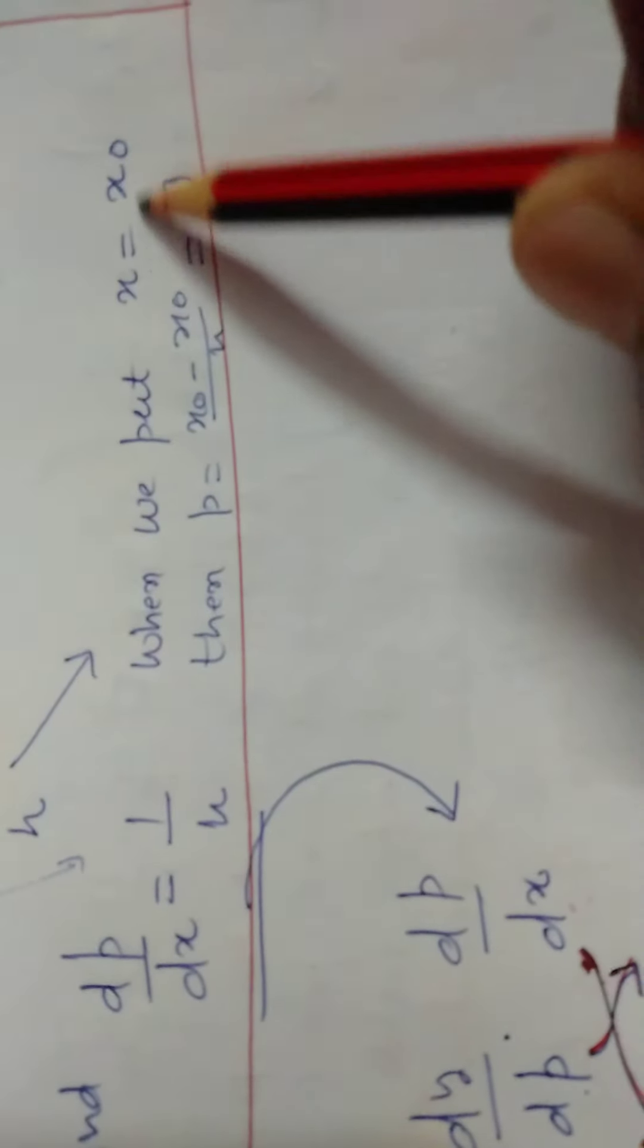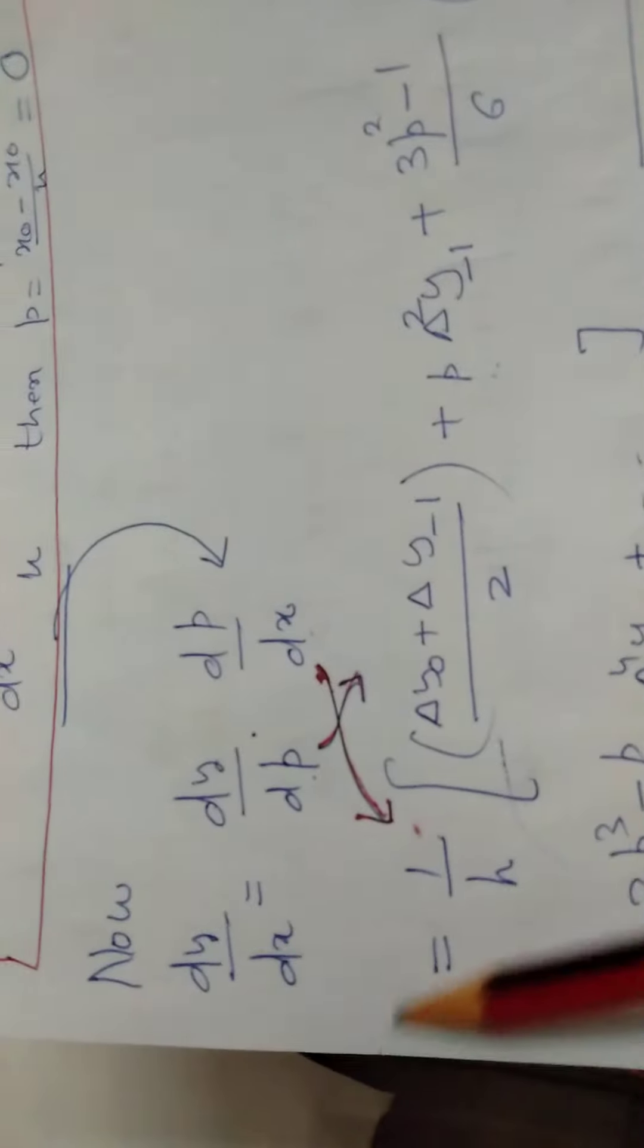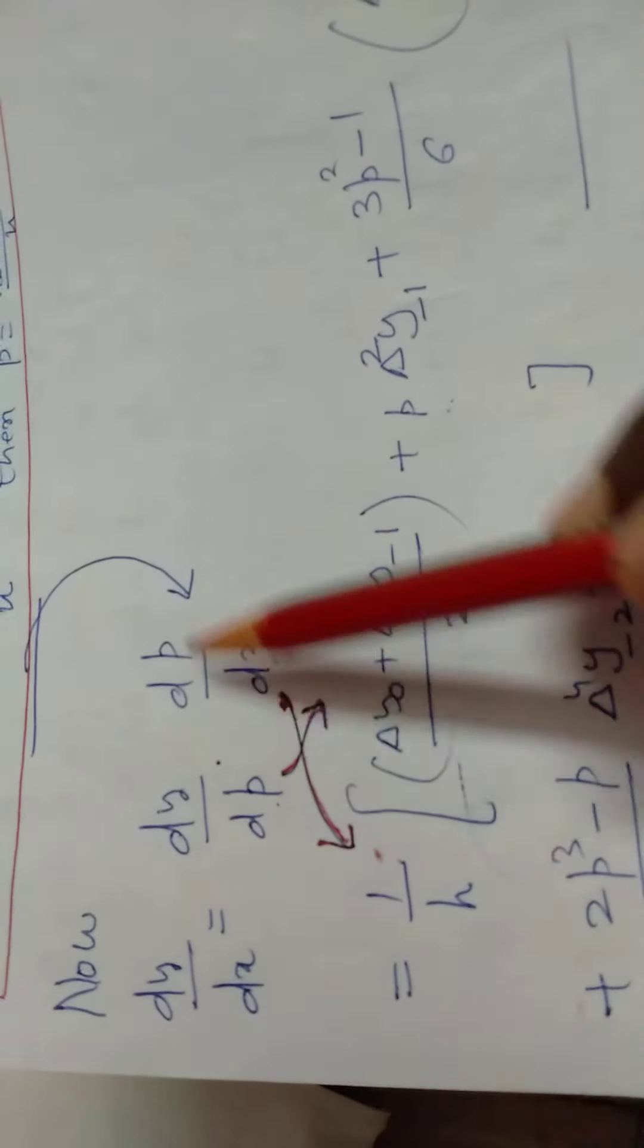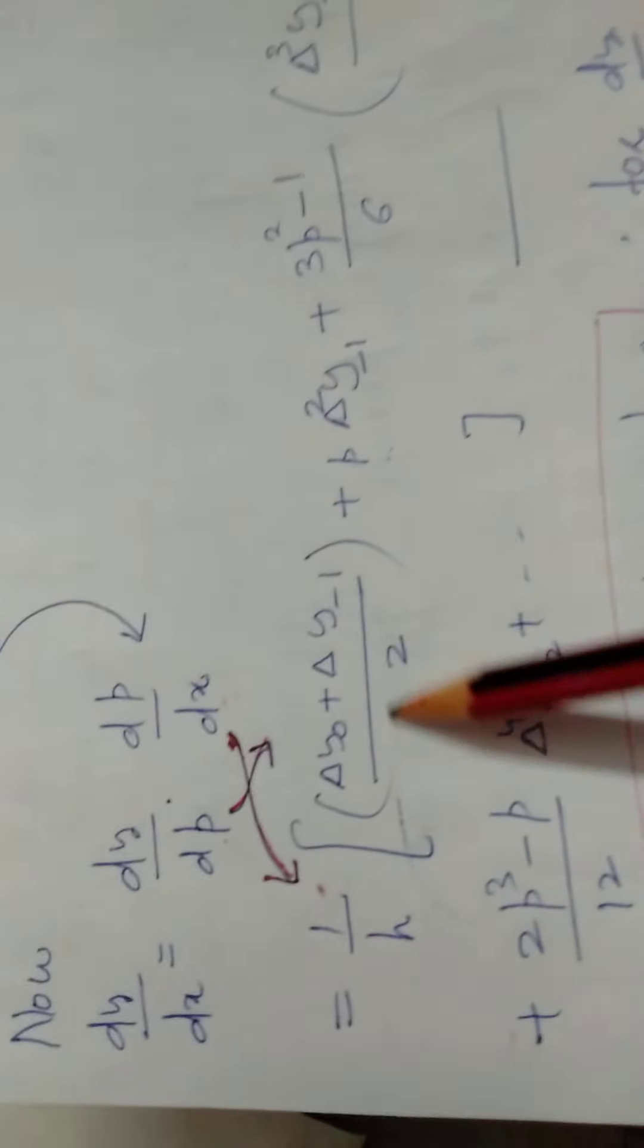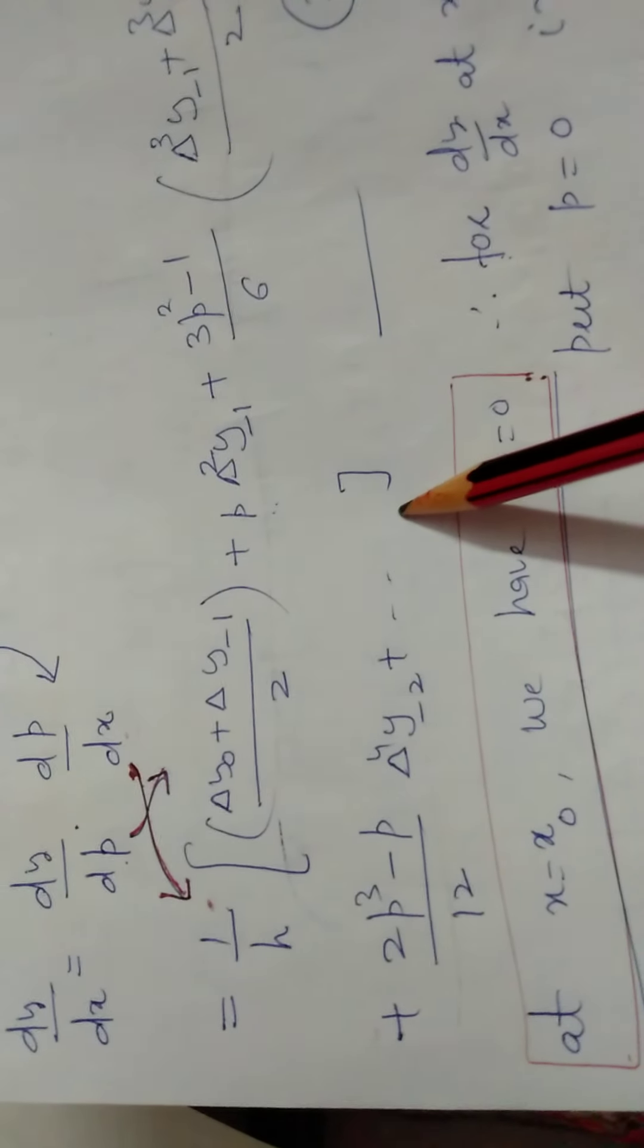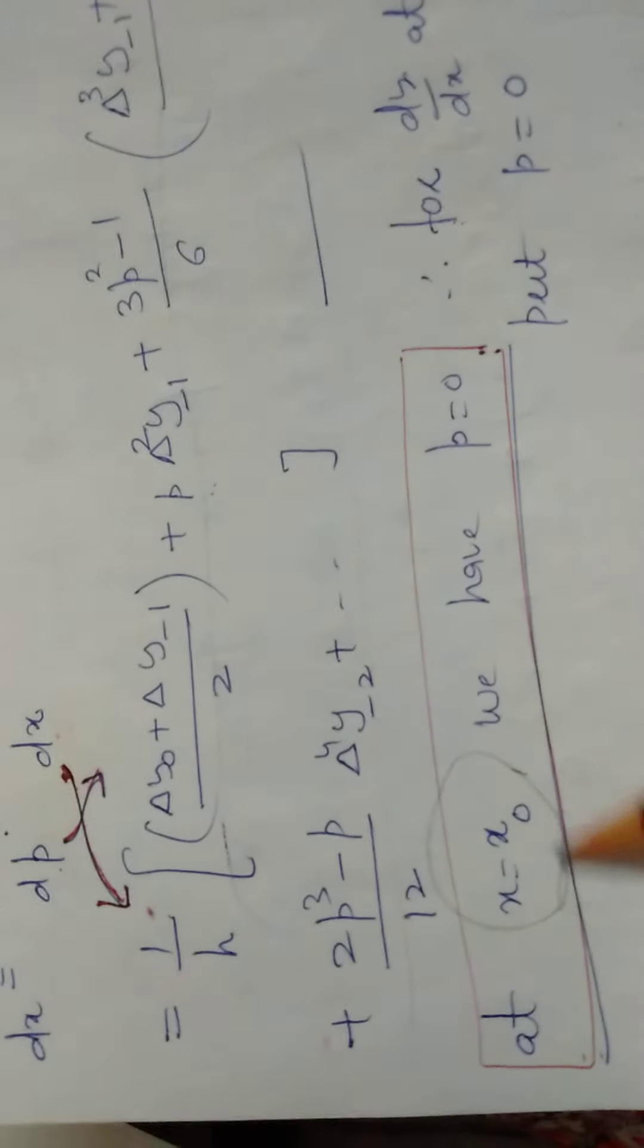And p will be x minus x naught divided by h. When we put x in place of x naught, we get p equals 0. So when we substitute x equals x naught, value for p equals 0. Our first derivative dy by dx is dy by dp into dp by dx. dp by dx is 1 by h, and dy by dx which is the back calculation, in place of p we substitute value 0.